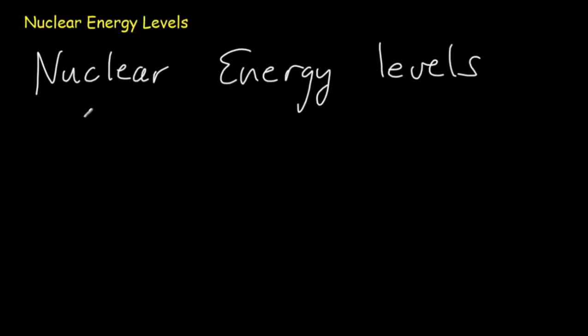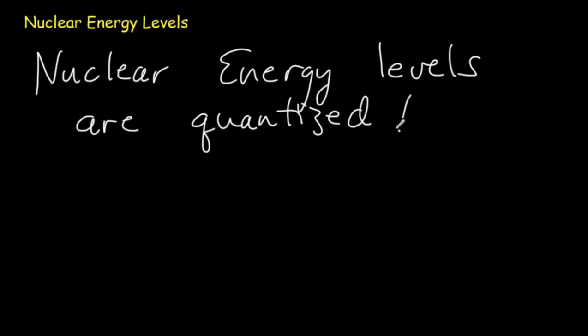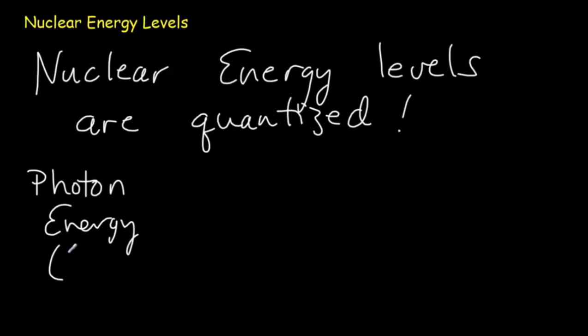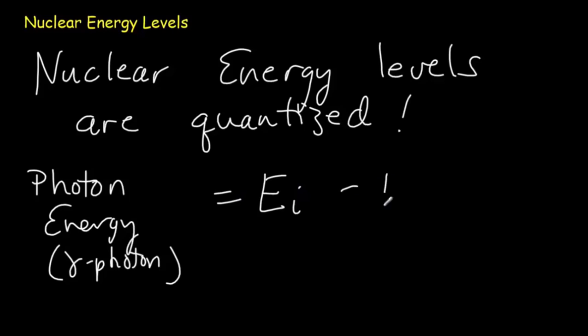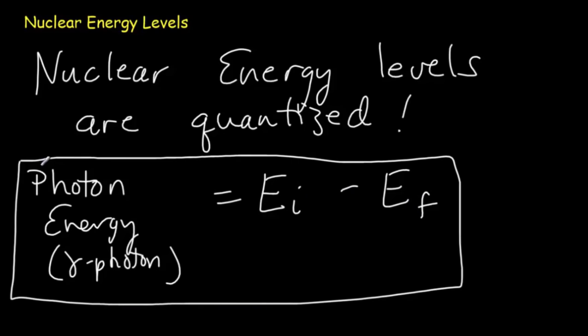Now if you understand atomic energy levels, nuclear energy levels are going to be straightforward because you do them exactly the same way. Nuclear energy levels are quantized the same way that atomic energy levels are. In the same way that an atom can get excited, a nucleus can get excited, but there are only discrete energy levels it will get excited to. The photon emitted — this time a gamma ray photon because it's more energetic — has energy equal to the difference in the energy levels: the initial excited state minus the final lower energy state.